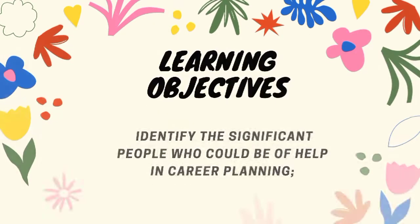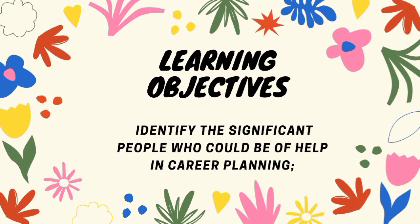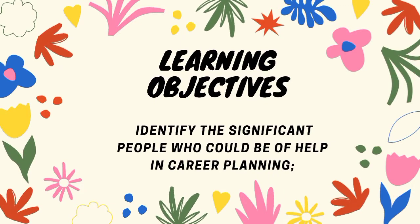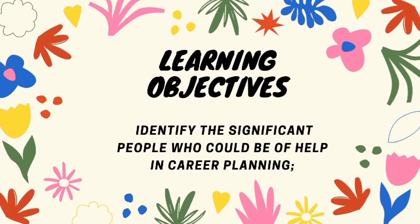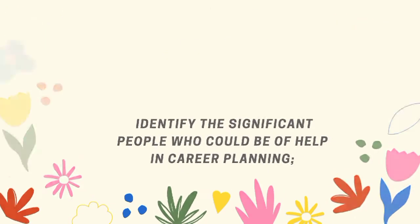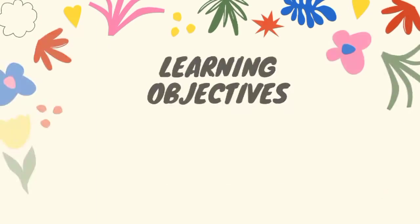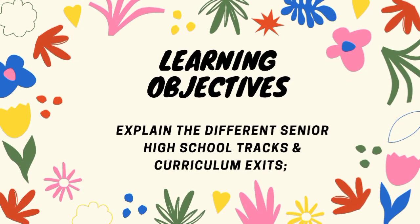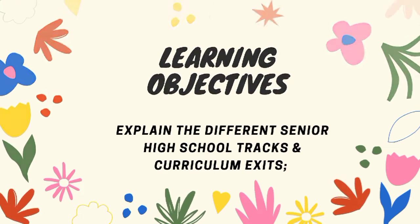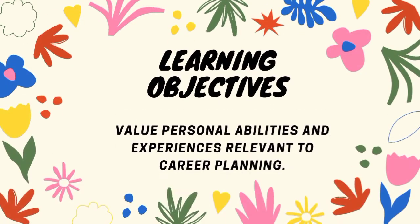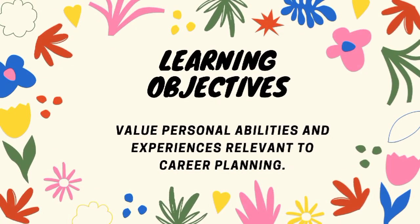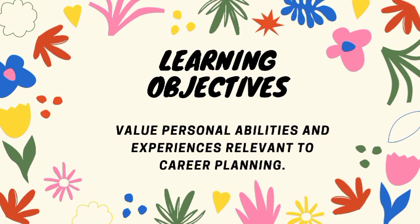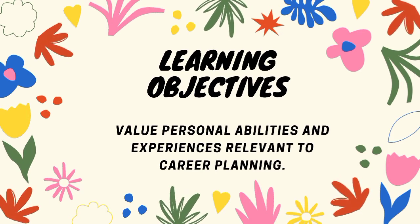Here are the learning objectives. Number 1: Identify the significant people who could be of help in career planning. Number 2: Explain the different senior high school tracks and curriculum exits. Number 3: Value personal abilities and experiences relevant to career planning.